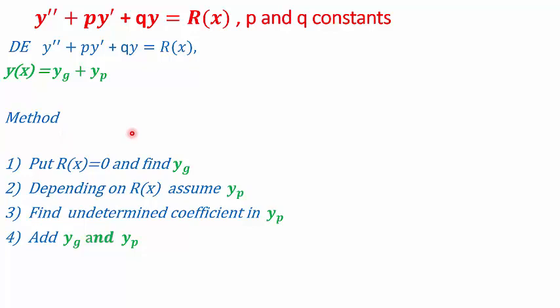Let's look at the method. The first thing we do is take the right-hand side of the differential equation as 0, which reduces it to a homogeneous differential equation. We find the general solution yg of such an equation. Next, we assume a particular solution yp depending on our right-hand side r(x). This yp has some constants, known as undetermined coefficients. We substitute yp and its derivatives in the differential equation and, after comparing coefficients on both sides, we find these undetermined coefficients, substitute them in yp, then add yp to yg to get our y(x).